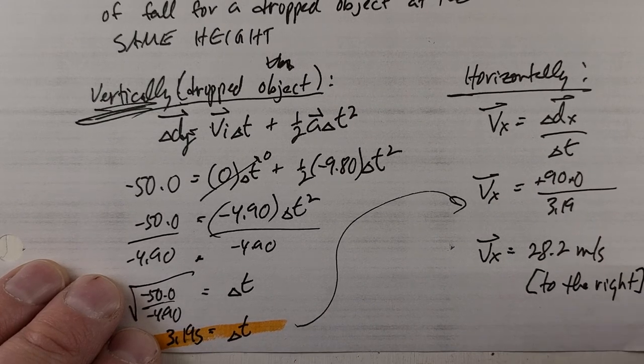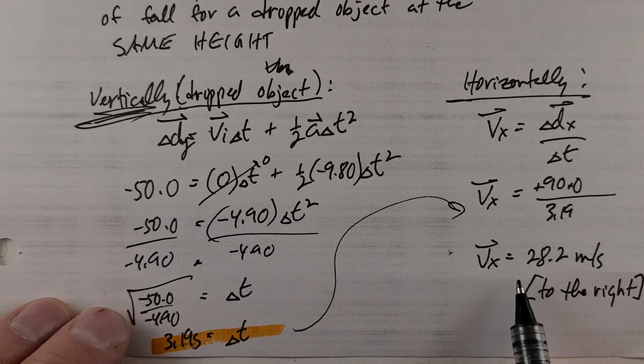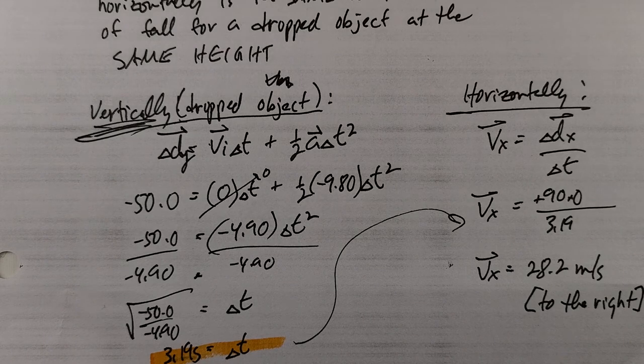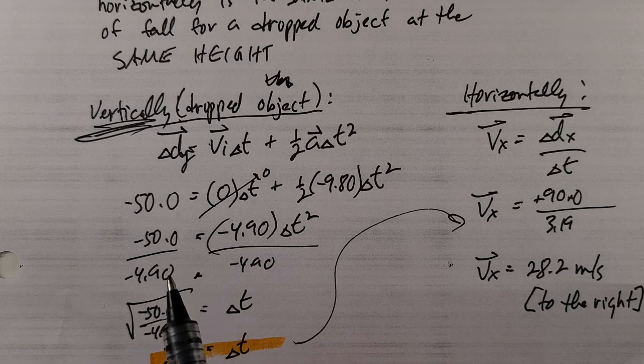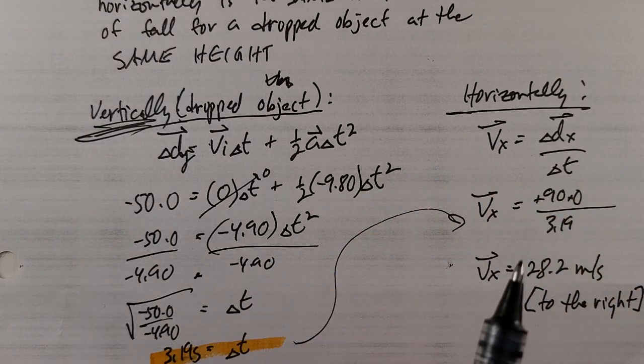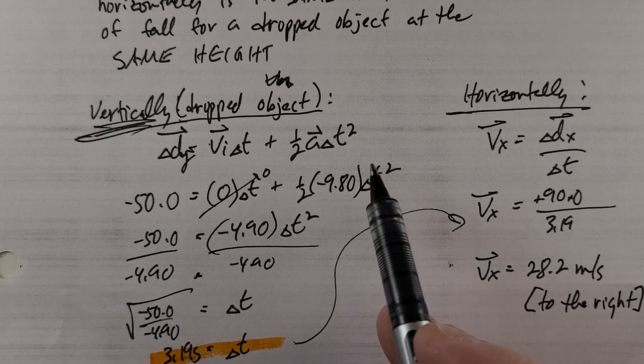So there we go. Now in the assignment, I have various things involving this type of scenario—a cliff or a rock, something going off horizontally. You'll get different variables, but the analyzing of the question is the same.